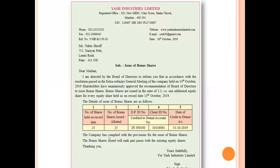The company has complied with the provisions for the issue of bonus shares. The bonus shares issued will rank Pari Passu with the existing equity shares. Remember the word Pari Passu — we have already studied this in the sweat equity topic. Pari Passu means equal weightage; the bonus shares will have equal weightage as the original existing equity shares Miss Yukta is holding. The letter closes: 'Thanking you, Yours faithfully, Yash Industries Limited' — signed by Mr. S.R. Nayar, Company Secretary.